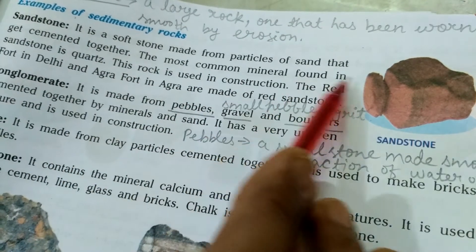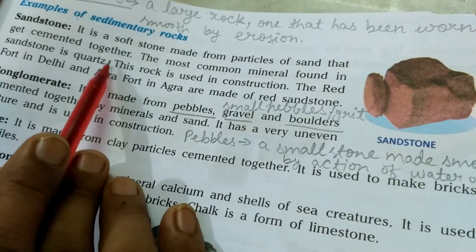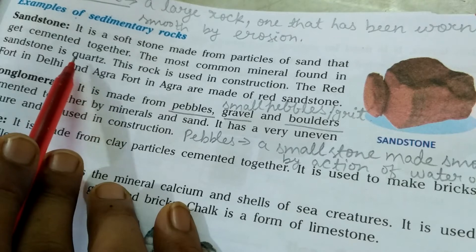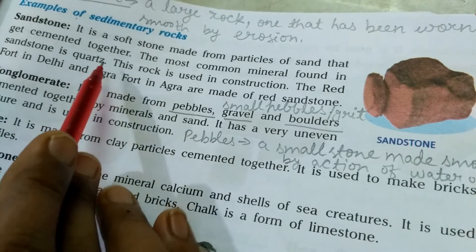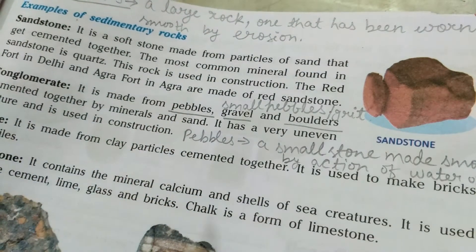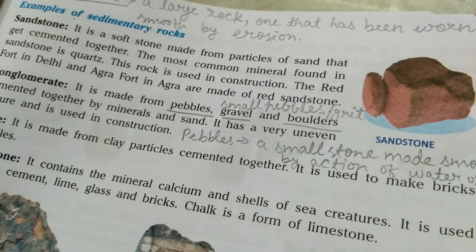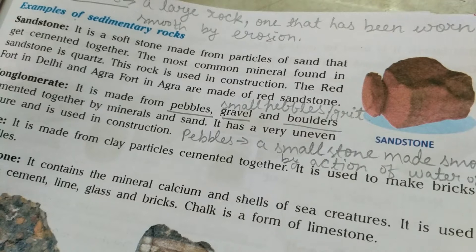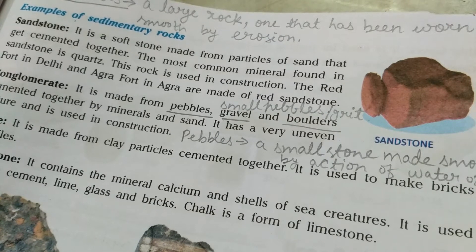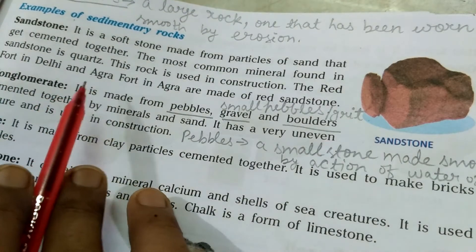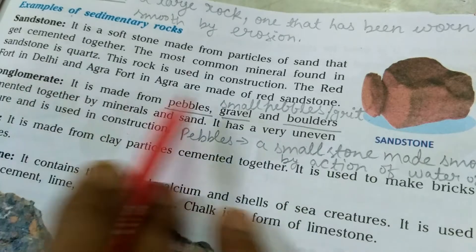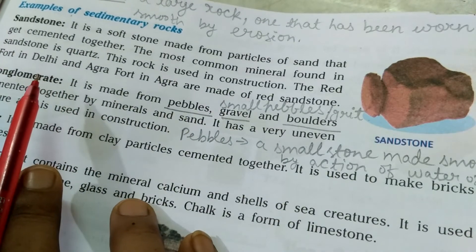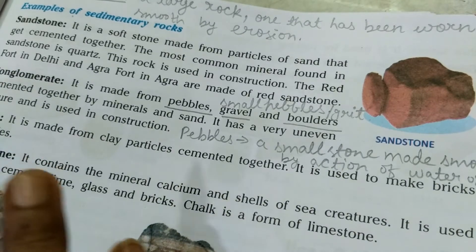The most common mineral found in sandstone is quartz. For each rock type, it is important to understand how it is formed, its examples, which important mineral is found in it, and what it is used for — these are the key things to keep reading and learning.